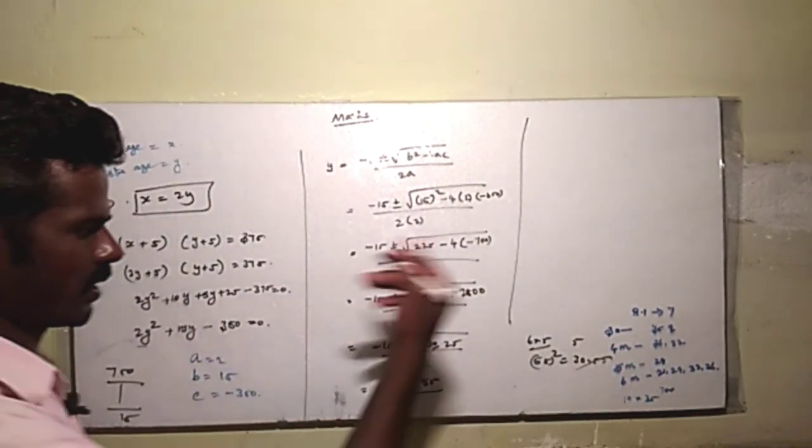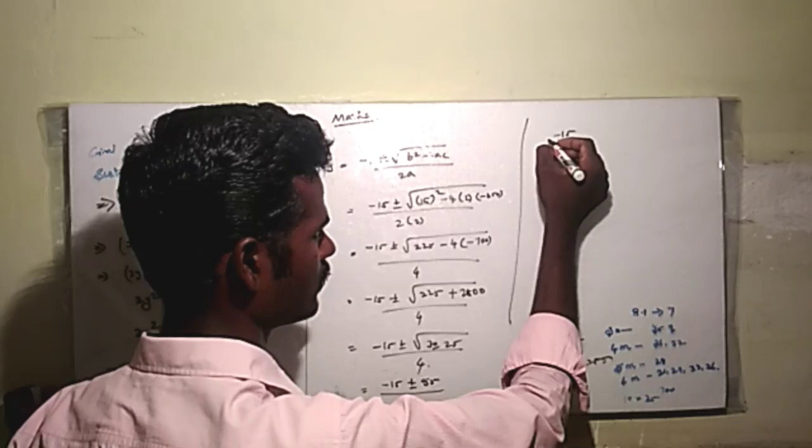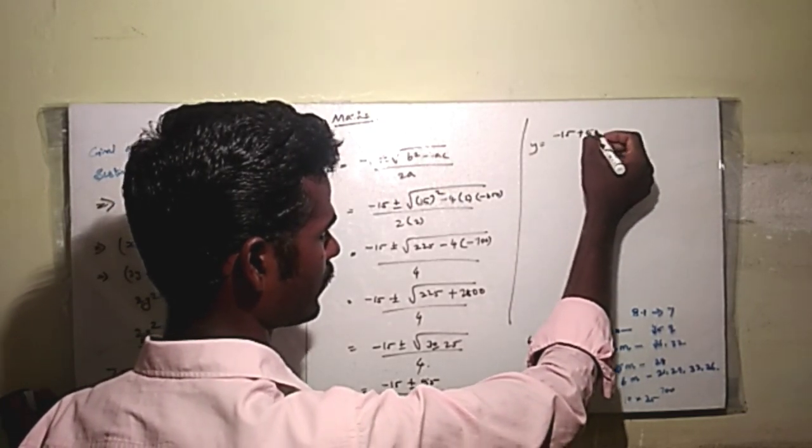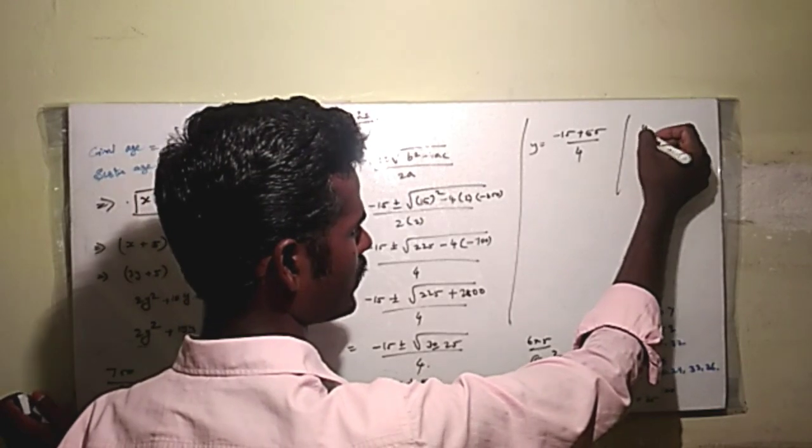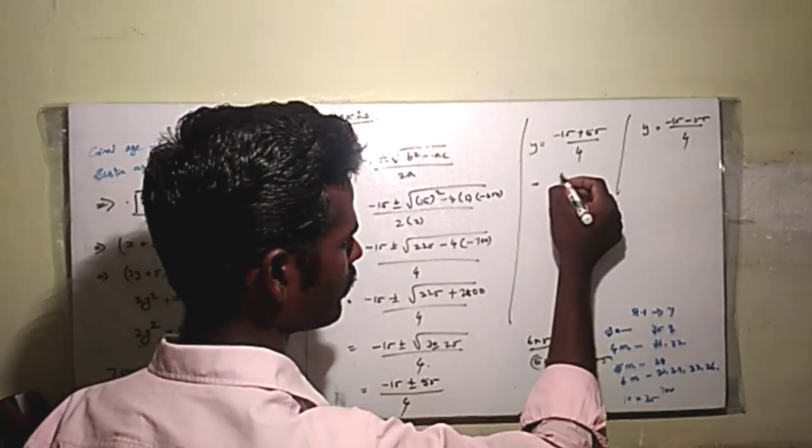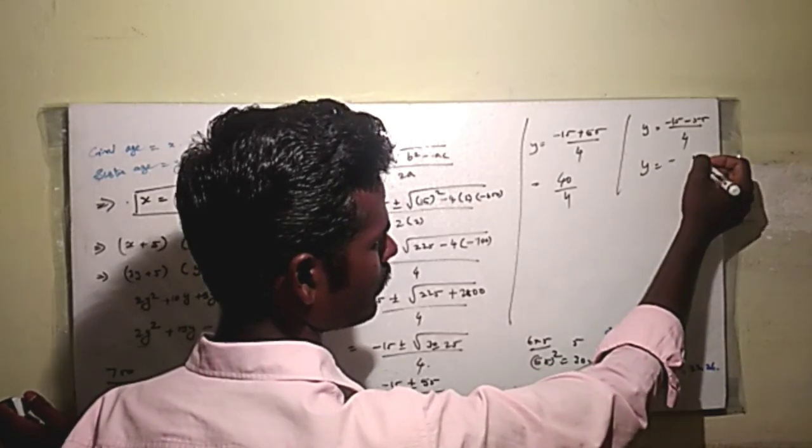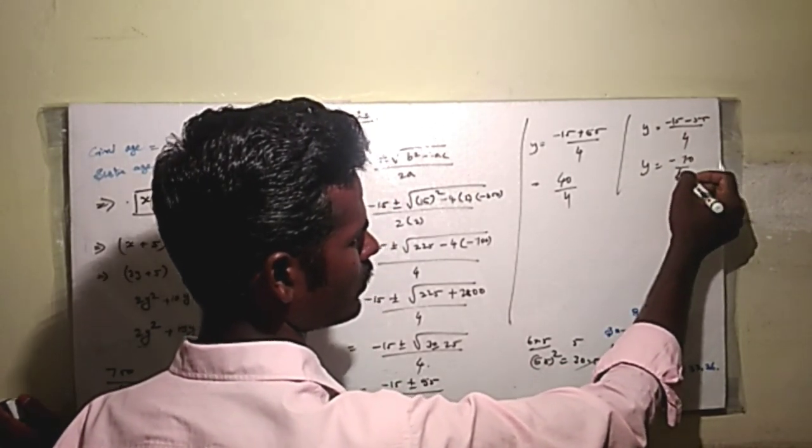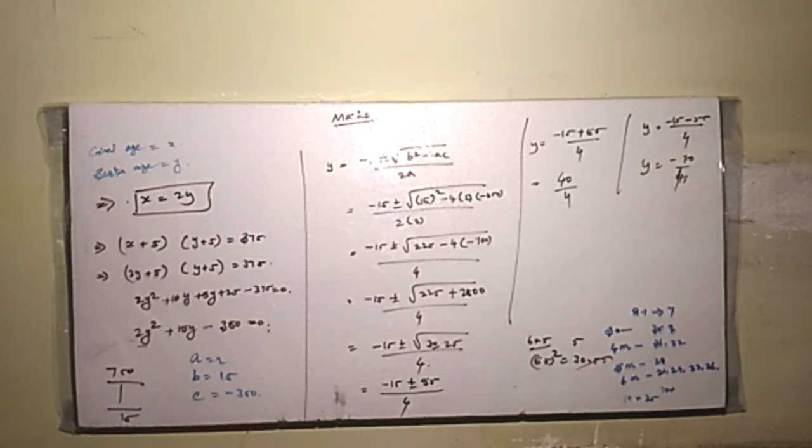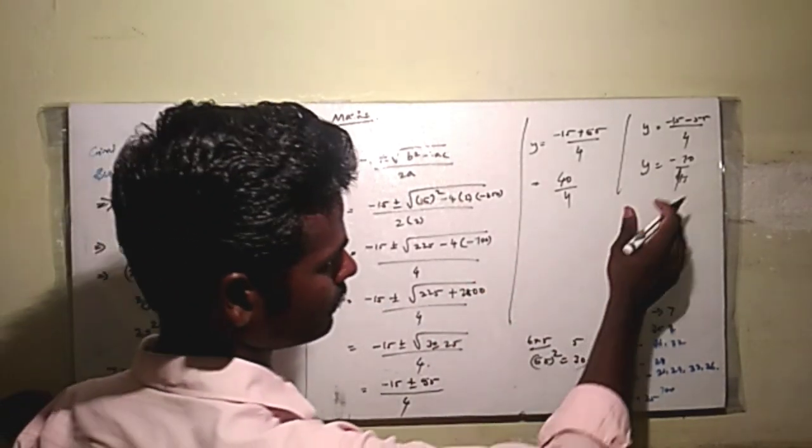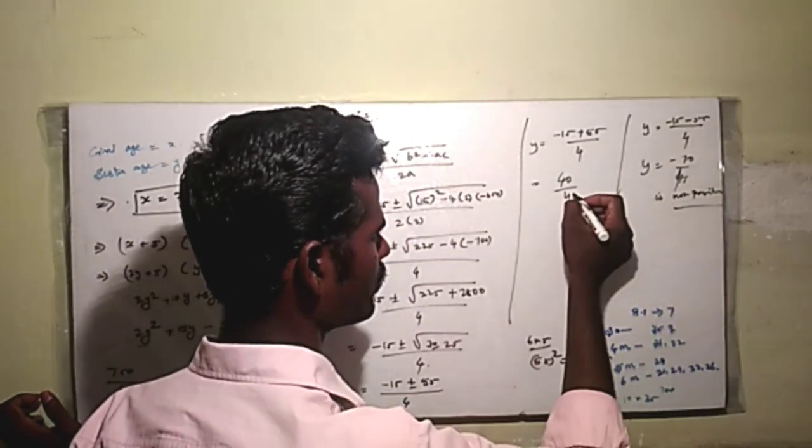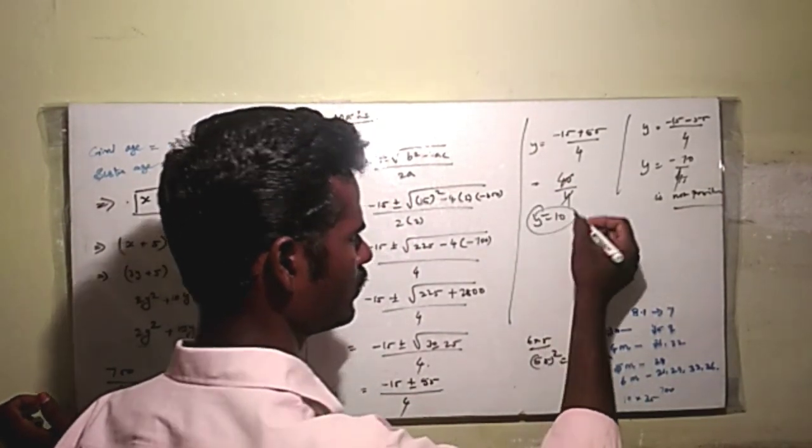Separating the plus and minus: y equals minus 15 plus 55 divided by 4, which is 40 divided by 4, so y equals 10. Or y equals minus 15 minus 55 divided by 4, which is minus 70 divided by 4. The negative value is not possible.